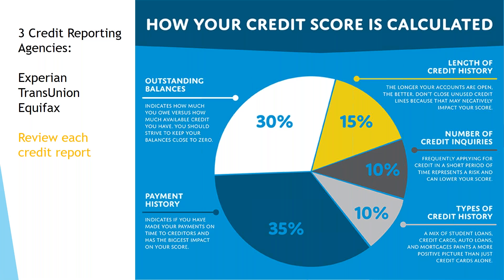There are three credit reporting agencies: Experian, TransUnion, and Equifax. They each produce a slightly different credit report, and this is the information that goes into how your credit score is calculated. You can see it includes outstanding balances, your payment history, how long you've had credit, how many inquiries to your FICO score there have been recently — every time you apply for a loan it hits your credit report — and the types of credit you have, whether student loans, credit cards, or car loans. These three credit agencies then calculate a FICO score for you.